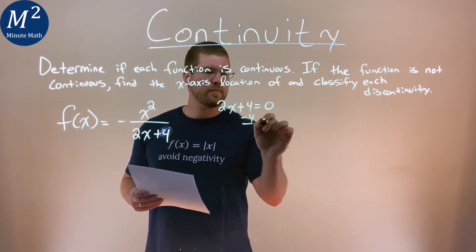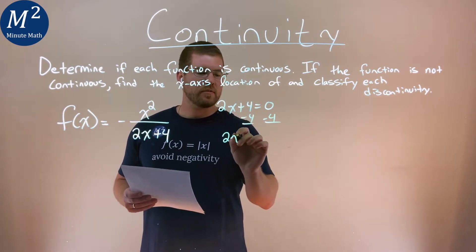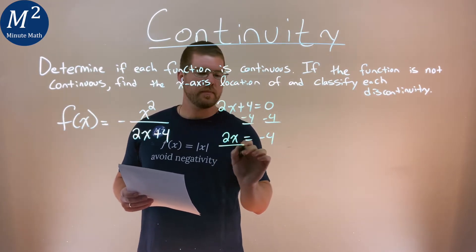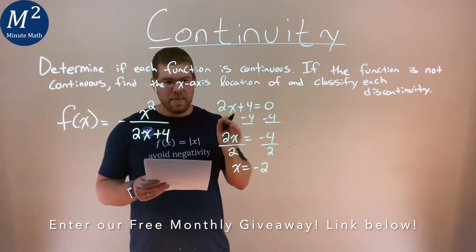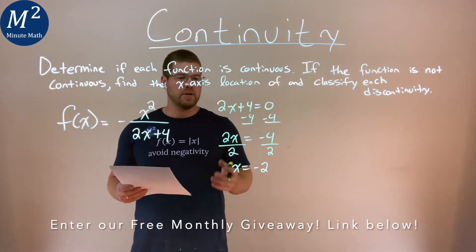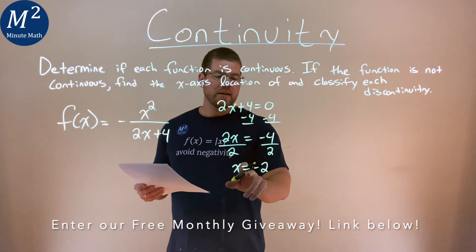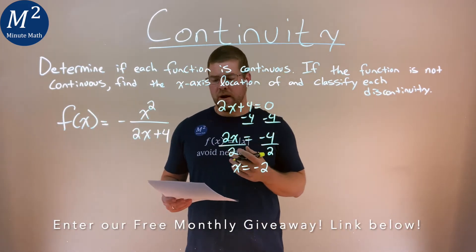Subtract 4 from both sides, and we have 2x equals negative 4. Divide both sides by 2, and x equals negative 2. And that's really what's happening here. What's really going on is that at negative 2, we can't put that value in for x.